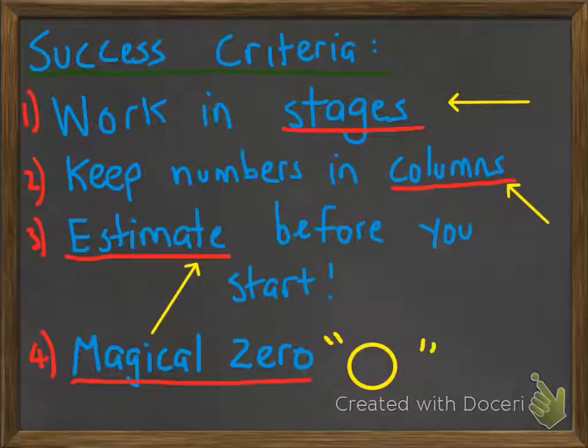Success criteria: number one, work in stages. Number two, keep your numbers in columns so ones, tens, hundreds, and thousands. Three, estimate before you begin and number four, we're going to introduce the magical zero. So let's have a look.